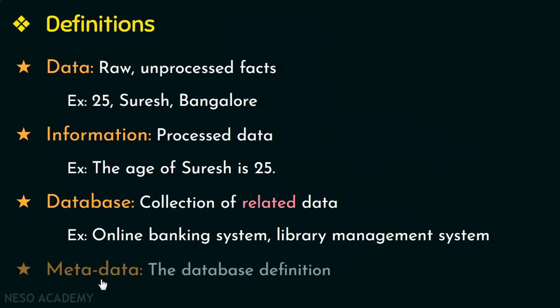The next one is metadata. Metadata is nothing but the database definition — in other words, it is the complete description of a database or it defines the database. Information like the storage format, the data type of the data that we are going to store in the database, or the constraints on the data — all this information is called as metadata. In the further videos we will see more definitions in relation to DBMS.